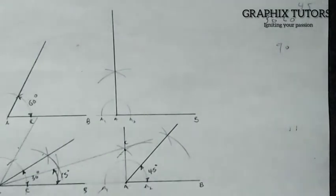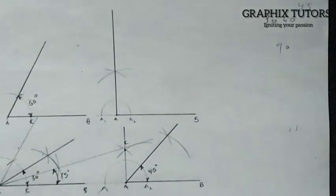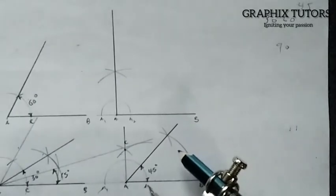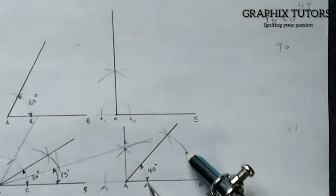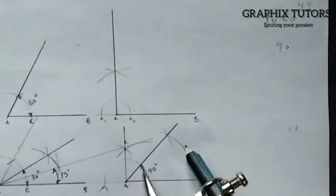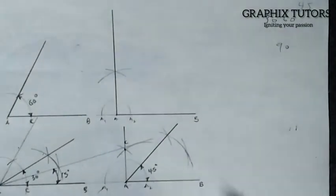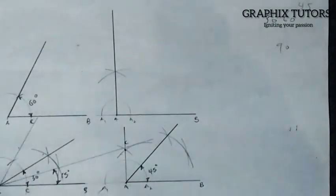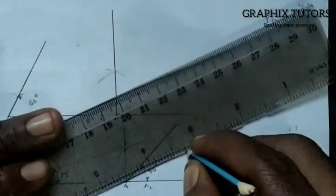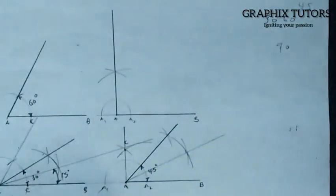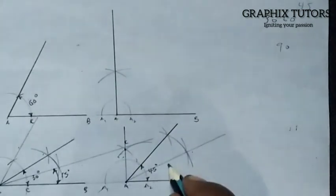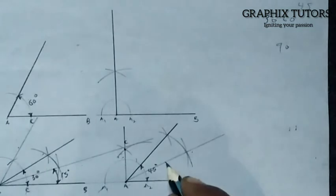Similarly, if you want to get 22.5 degrees, bisect the 45-degree angle. Place the compass at one side of the 45-degree angle and strike an arc, then do the same from the other side. Where they meet gives your 22.5-degree line. The 45-degree construction is faint and the 22.5-degree line is the final result.